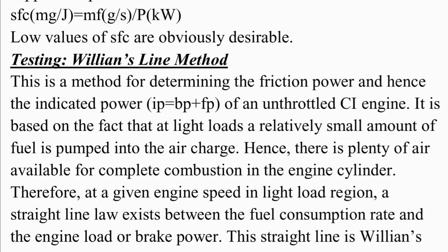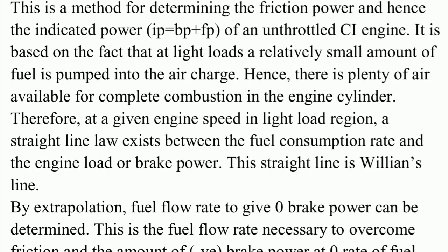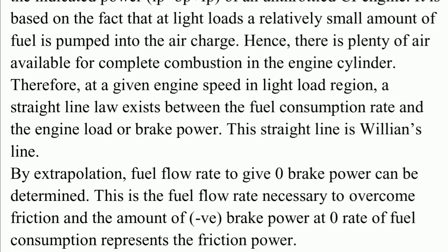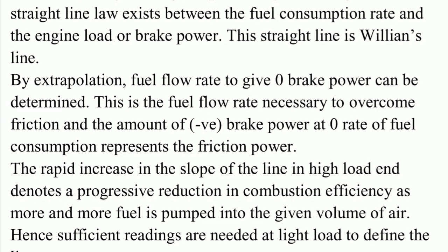Williams Line method: this is the method for determining the friction power and hence the indicated power, where IP equals BP plus FP, of an unthrottled engine. It is based on the fact that at light loads a relatively small amount of fuel is pumped into the air charge, hence there is plenty of air available for complete combustion in the cylinder. Therefore, at a given engine speed in the light load region, a straight line relationship exists between the fuel consumption rate and the engine load or brake power — this straight line is the Williams Line.